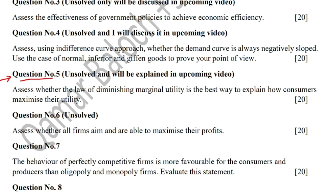Question number five says: assess whether the law of diminishing marginal utility is the best way to explain how consumers maximize their utility. Keep in mind that sometimes students give very good knowledge but still don't get good marks because they ignore assessment objectives set by Cambridge, or they make mistakes in graphs — wrong labels or incorrect labels — so such answers can get maximum eight to nine marks out of twenty.